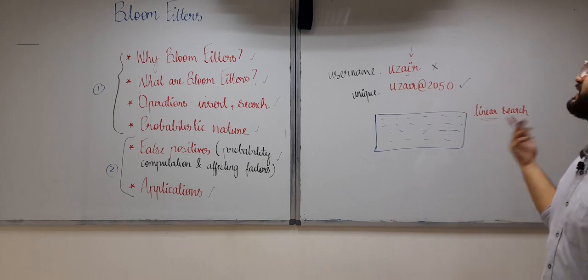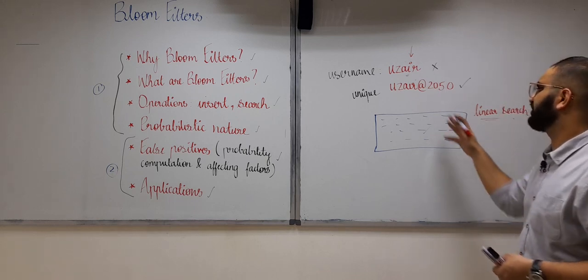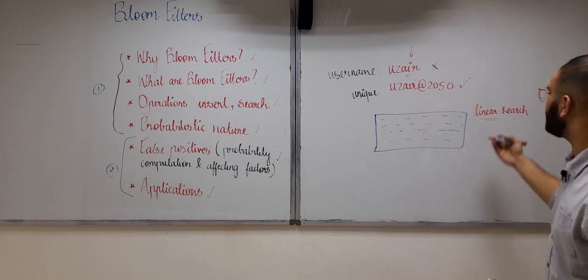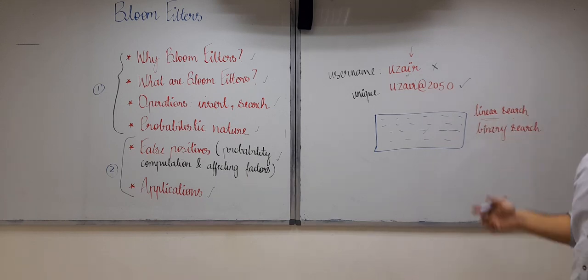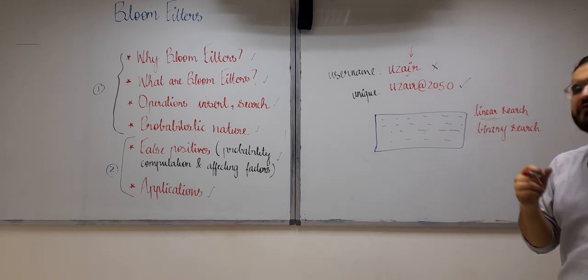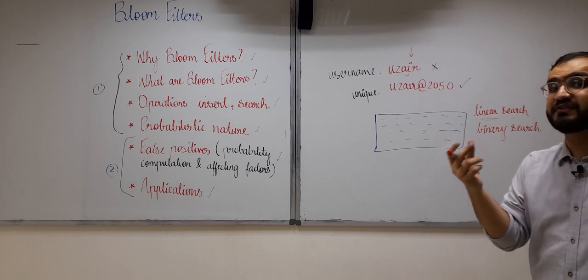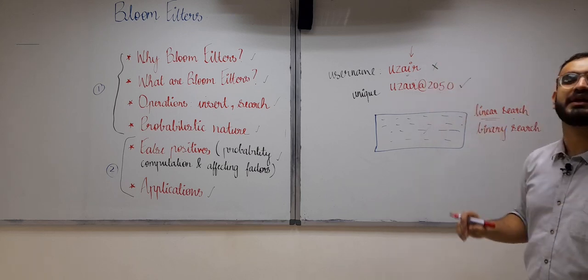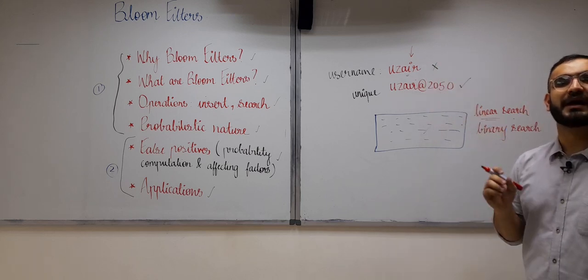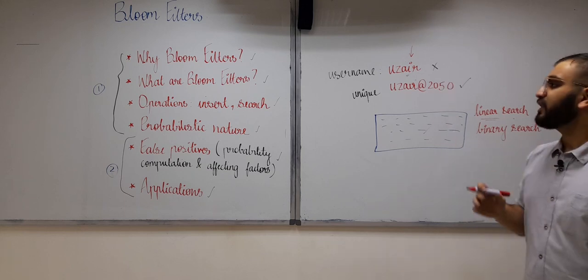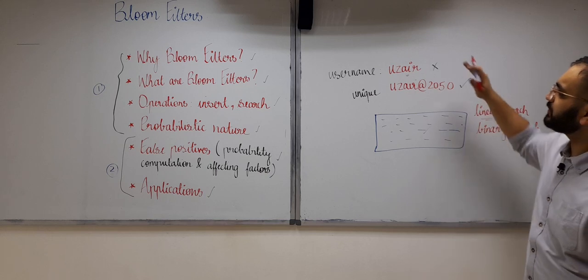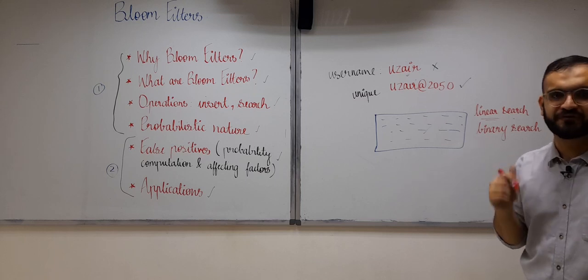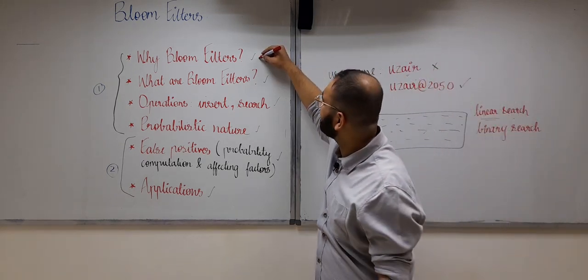Linear search on millions of users is not the right option. You might suggest binary search — store all usernames in sorted order and do a binary search with time complexity O(log n). But can we reduce time complexity even further? We need a very fast response time. We can perform this search in constant time by using bloom filters.